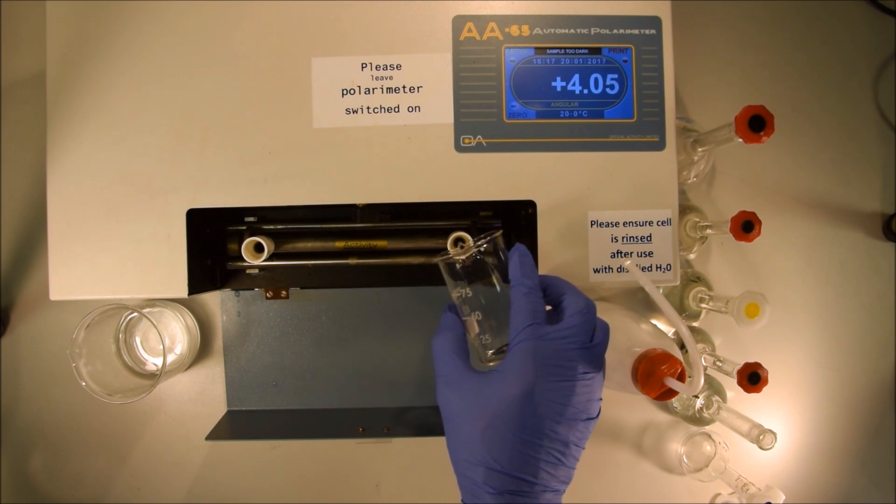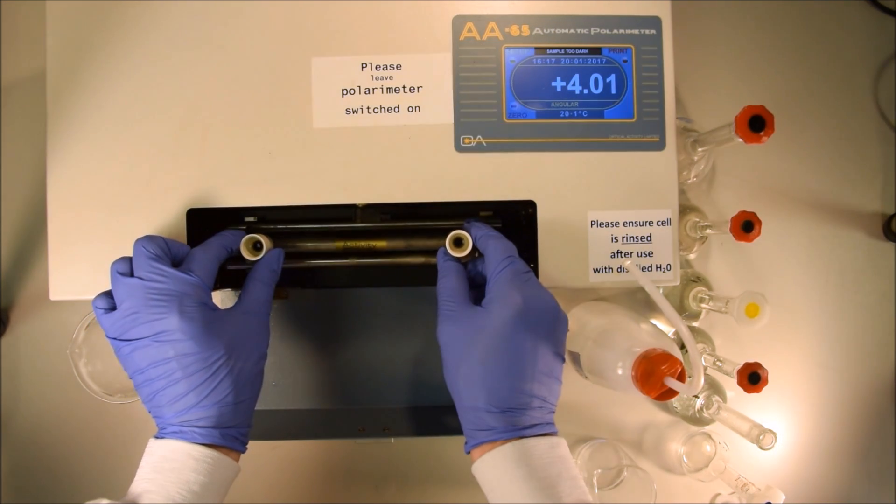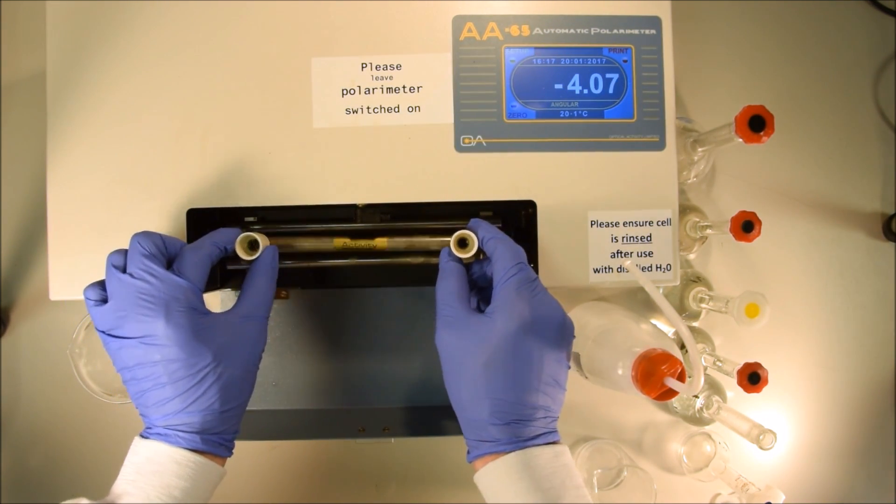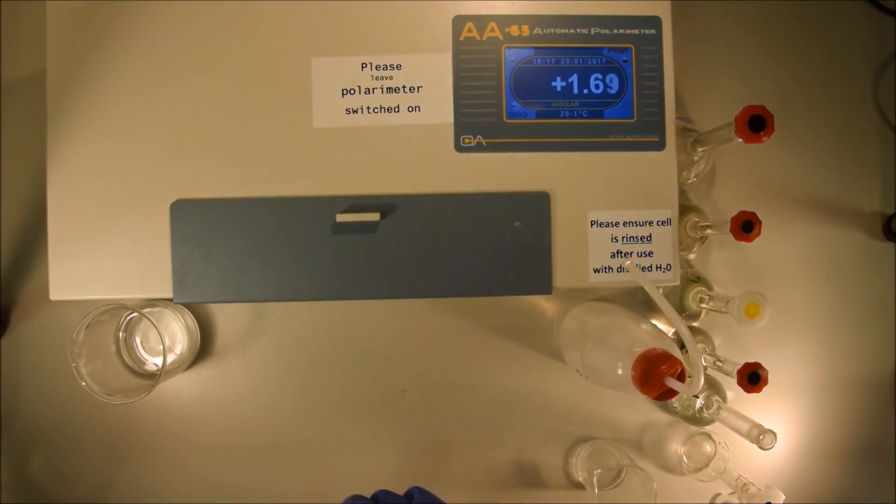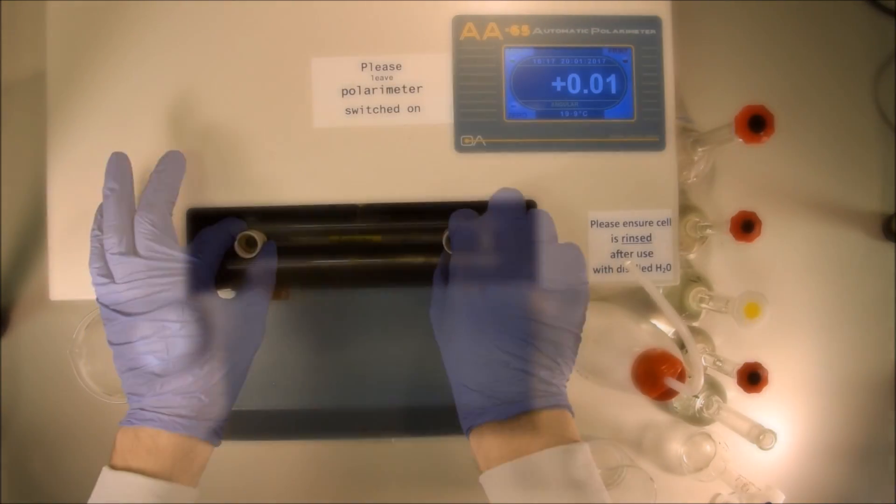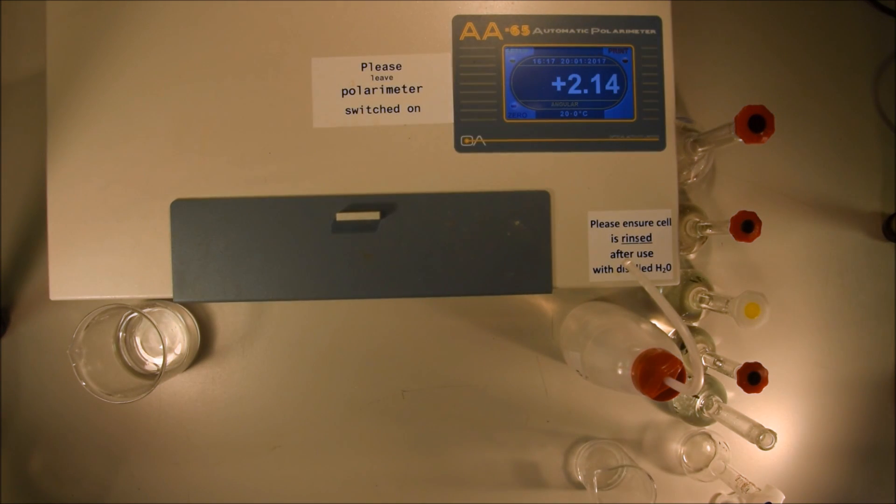I'll show you an example where I don't wash the cell out and you can see my reading is off by more than 10%. I'm filling the cell from a beaker rather than filling it directly from the volumetric flask. This is a practical convenience because some volumetric flasks have very narrow necks and it's almost impossible to fill them without spilling it everywhere.